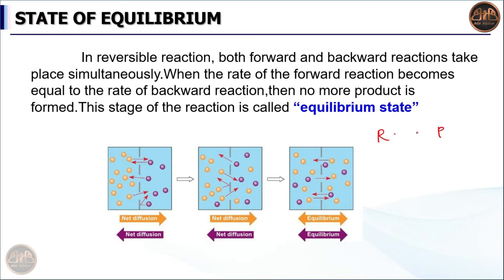The forward reaction is the direction in which reactants form products. The backward reaction is the direction in which products reform reactants. Compared to the backward reaction, the forward reaction is initially fast. The forward reaction starts fast and becomes a bit slower over the process.